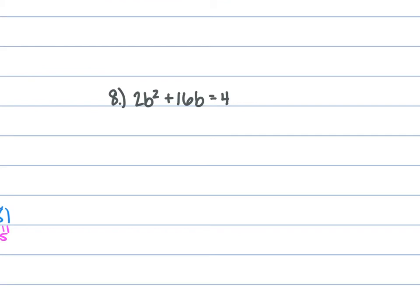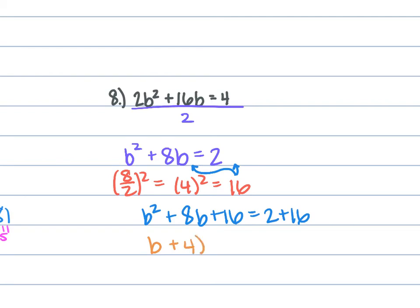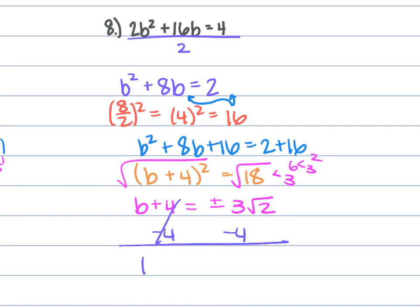For problem 8, we have 2b squared plus 16b equals 4. Divide everything by 2: b squared plus 8b equals 2. b is 8, so 8 over 2 squared is 4 squared, which is 16. Add 16 to both sides: b squared plus 8b plus 16 equals 2 plus 16. Factor: b plus 4 squared equals 18. Take the square root: b plus 4 equals plus or minus 3 square root of 2. Subtract 4: b equals negative 4 plus or minus 3 square root of 2.